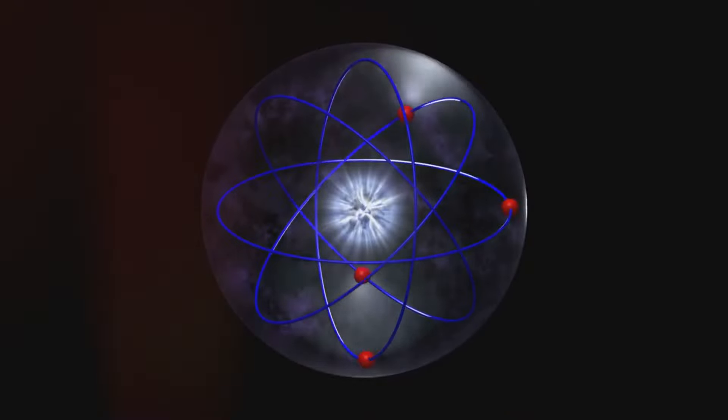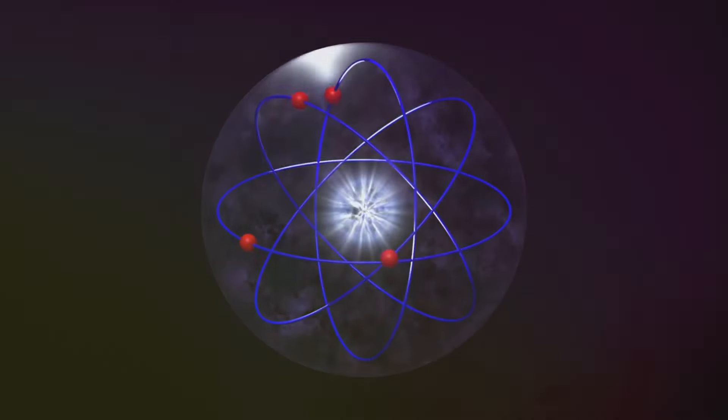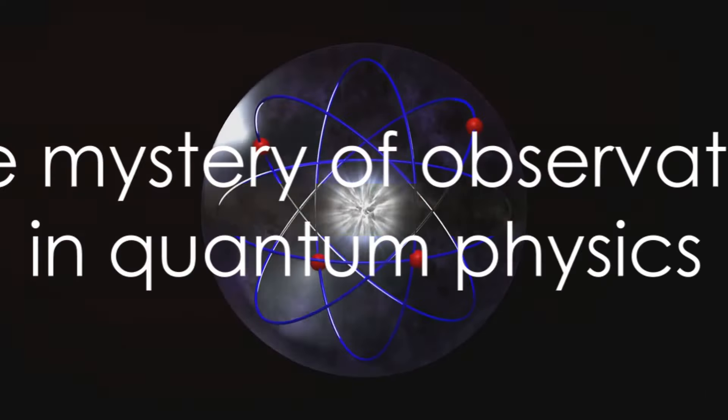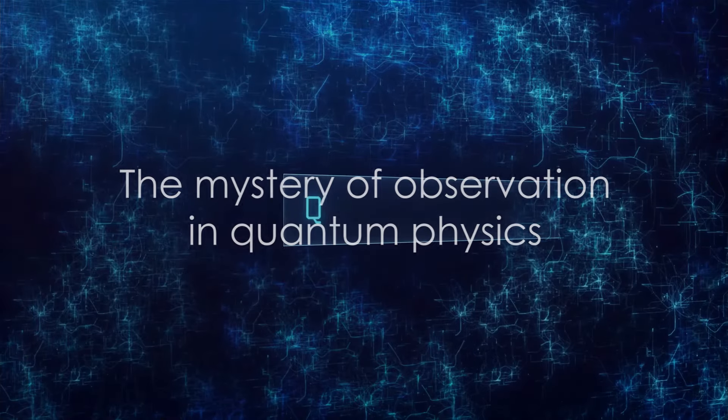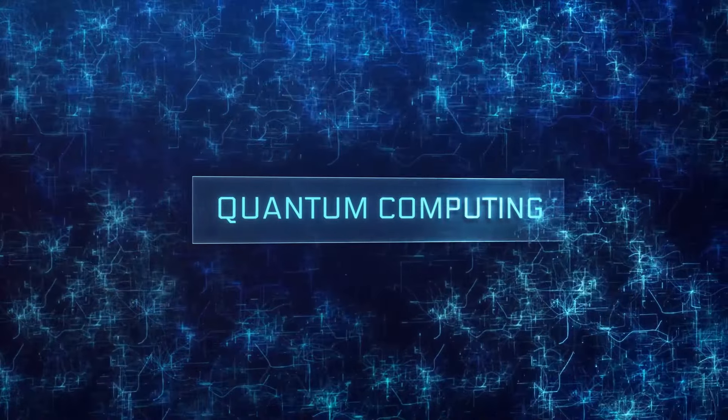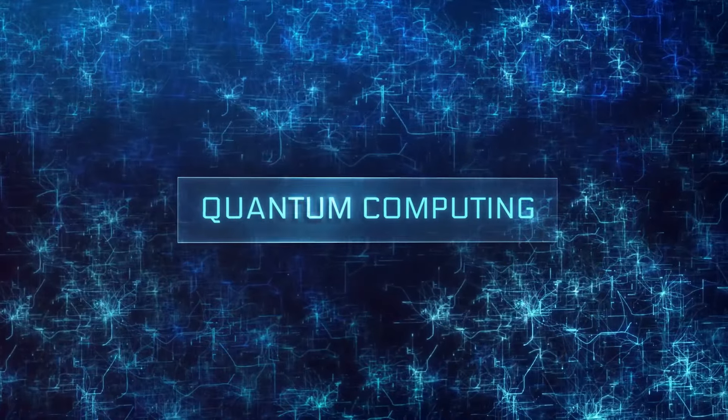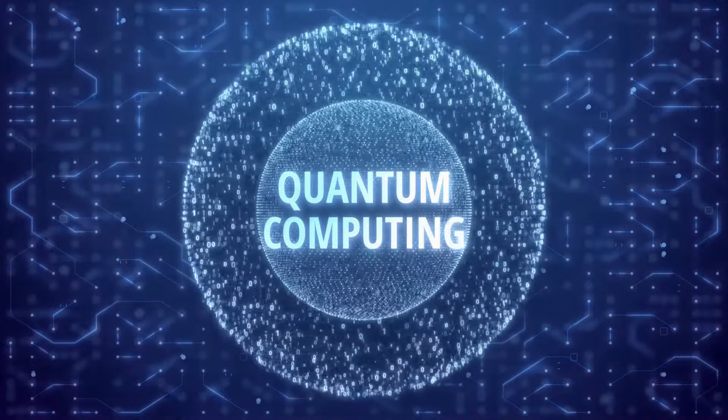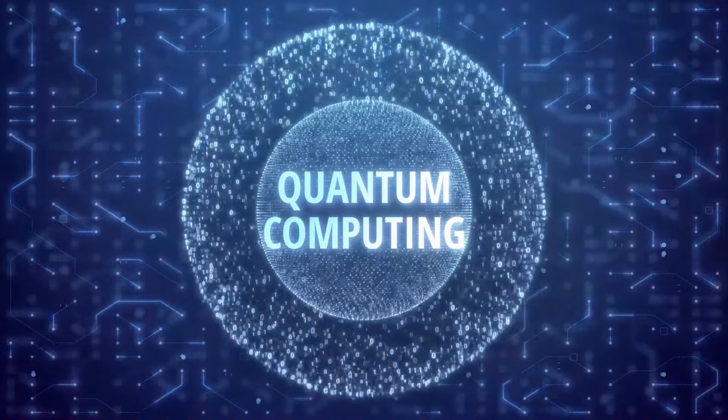It's as if your gaze compels the electron to decide where it will be. Why does this happen, you may wonder? The truth is, we don't fully understand. Some theories propose that any act of observation involves some level of interaction, disrupting the delicate quantum state. Others suggest a more profound implication: that consciousness itself plays a role in shaping reality.